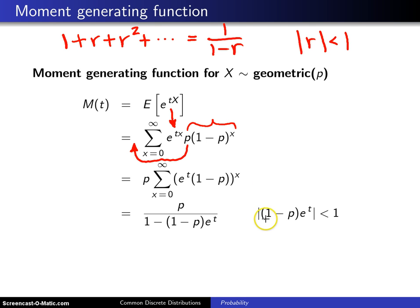whenever the absolute value of that common ratio is less than 1. Now, to do a moment generating function properly, we have to make sure that this function exists in a neighborhood of 0.